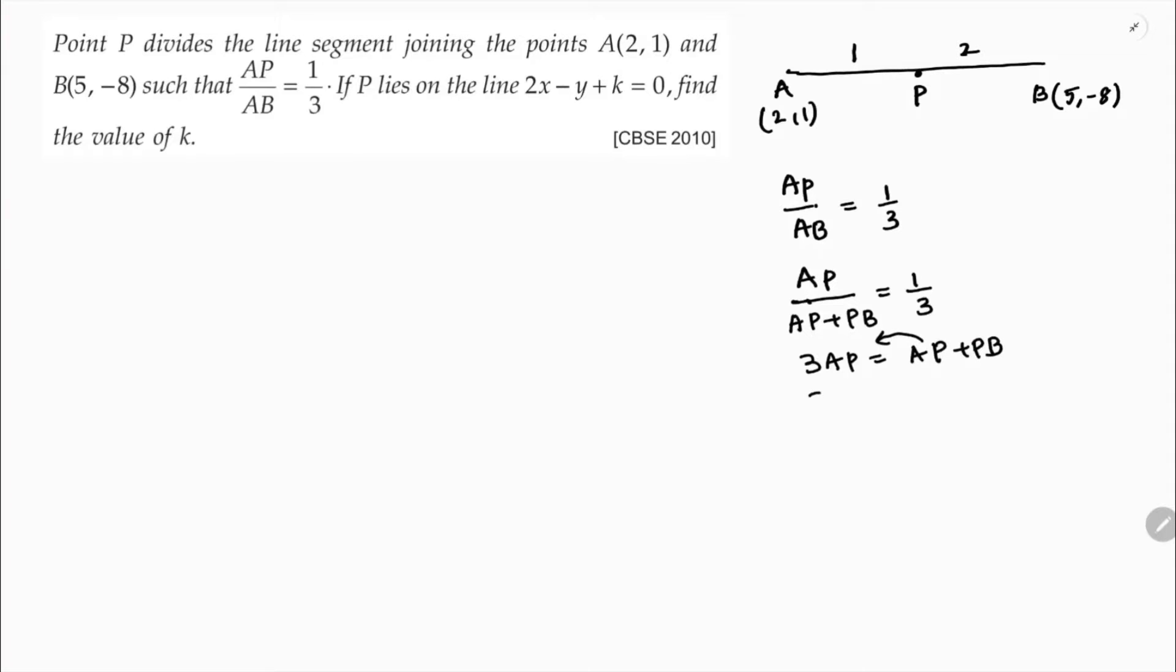Taking like terms to one side, 3AP minus AP is PB. So 2 times AP is PB.